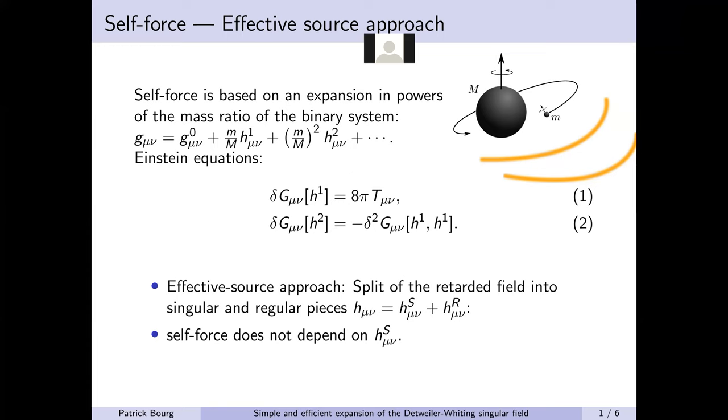The singular piece contains all of the local multipole structure of the point particle and is effectively a particular solution to the field equation, while the regular piece is a homogeneous solution and is therefore smooth.